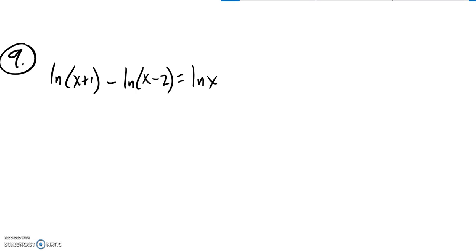I've got natural log statements all over the place, so I think what I'm going to do is some condensing. So I notice this is subtraction, so that's going to condense down to some division. So x plus 1 divided by x minus 2, and that equals the natural log of x.